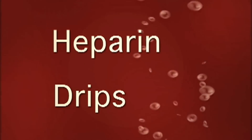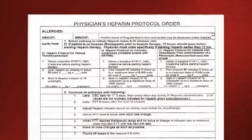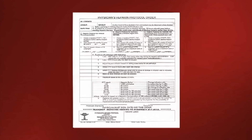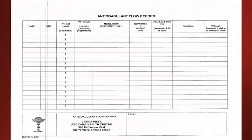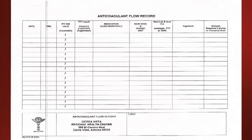We'll keep discussing heparin drips. We're going to be following the protocol approved by Sierra Vista Hospital. You will want to obtain a copy of the physician's heparin protocol order, an anticoagulant flow sheet, and a copy of the physician's heparin reversal protocol order, and place them on the chart. Keep the anticoagulant flow record on the front of the chart for easy access and to prevent it from getting lost.